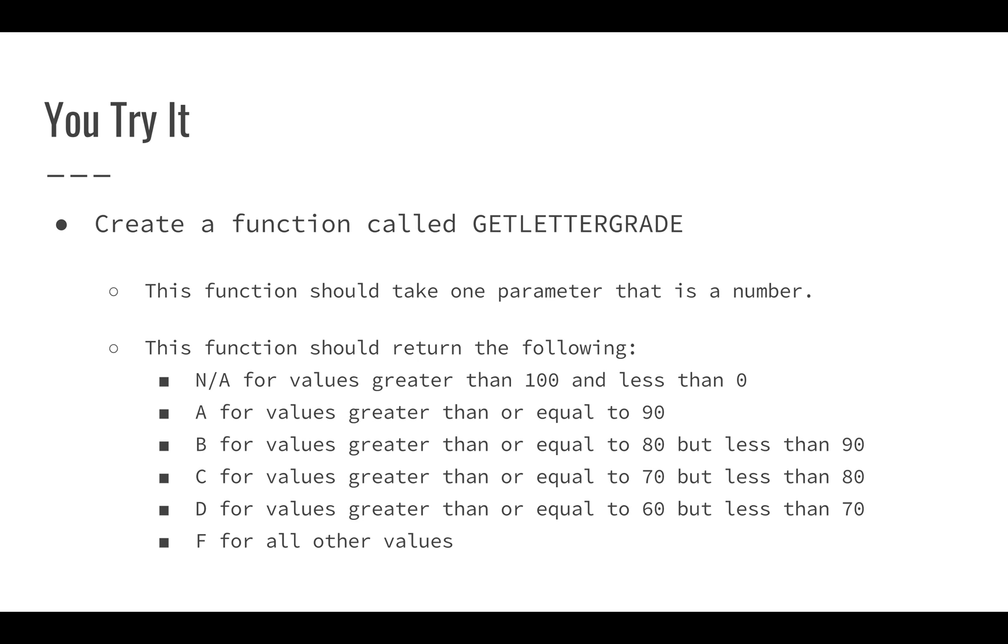So for this first one, N/A for values greater than 100 and less than 0, because we want to only look at valid letter grades. If there's an error, we want to know about that.